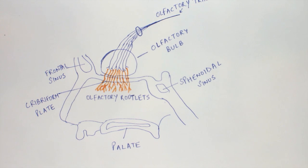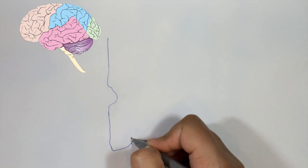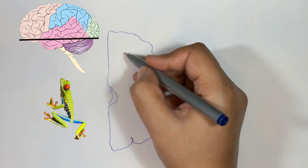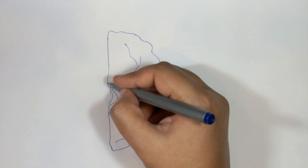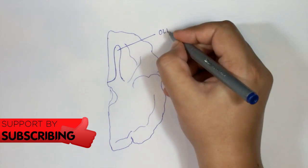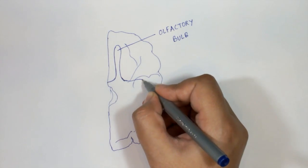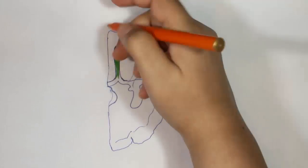Let's look at a section of a brain to understand the central portion of the olfactory pathway. In the top right corner of the screen you will see a diagram of the brain, and if we cut the brain at this point and look at it from below upwards, this is the current section that I'm drawing here. This is the olfactory bulb.